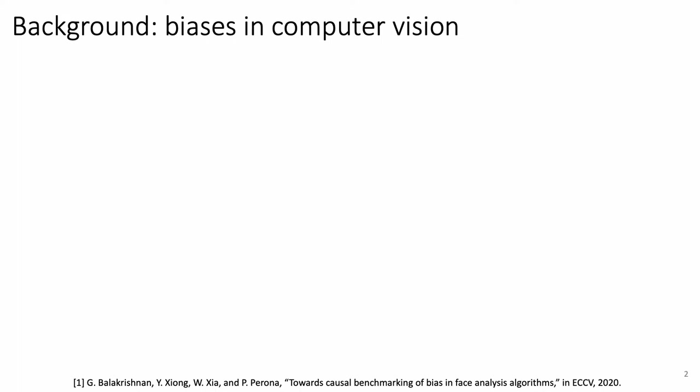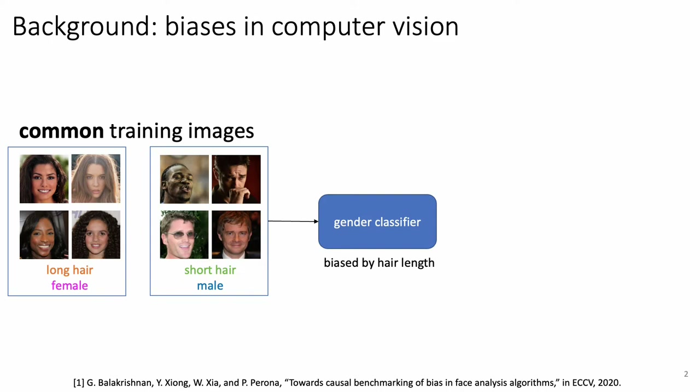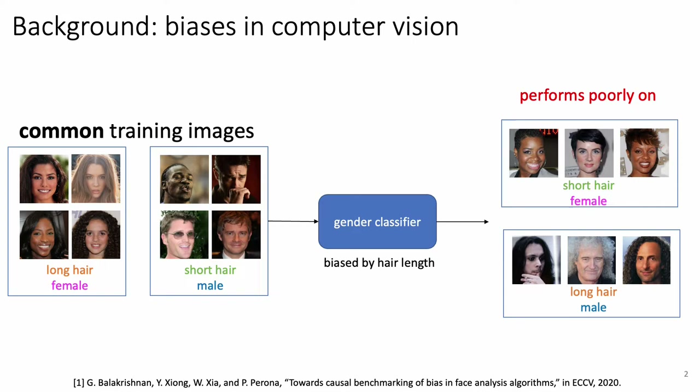Many previous works found that computer vision models learn biases from the dataset. For example, a gender classifier that learns common training examples such as long-haired female and short-haired male will perform poorly on short-haired female and long-haired male images, because the classifier simply uses the hair-length bias to predict gender.